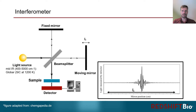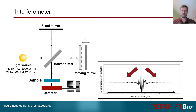Afterwards, the reflected beams get recombined and sent through the sample towards the detector where they interfere. The recorded data are a so-called interferogram, presented here on the lower right. It shows a main signal in the center, which is where both arms of the interferometer have the same length and the beams interfere constructively. As we go away from the center, the signal decreases because the arm lengths are increasingly different and the interference becomes more and more destructive.